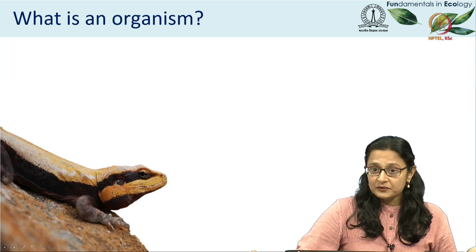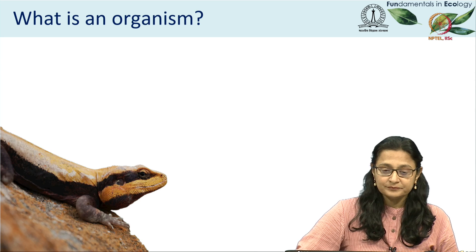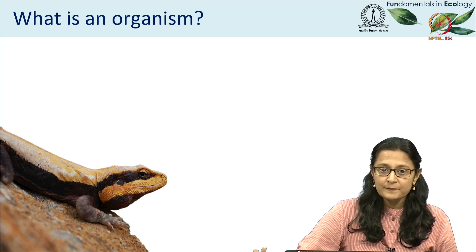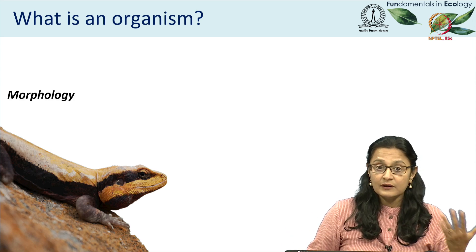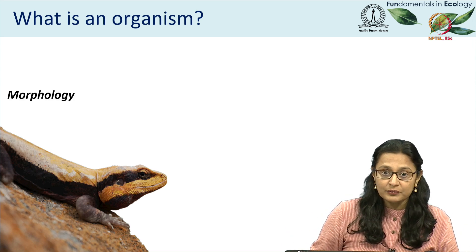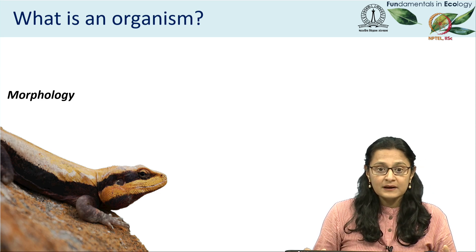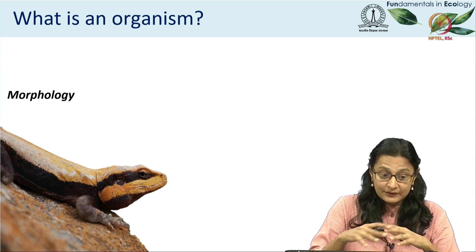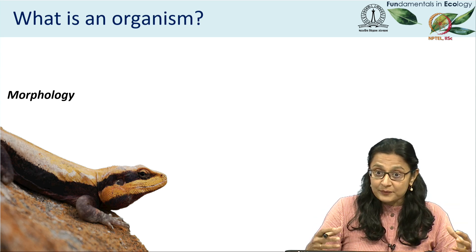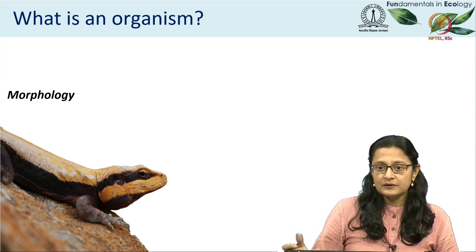So what is an organism then? If you look at this image here of the Indian Rokagama, you could describe this organism based on its morphology — so how it looks, for example its colour, its body form, the way its muscles are, the way its body is shaped. So you can describe an organism based on its morphology.